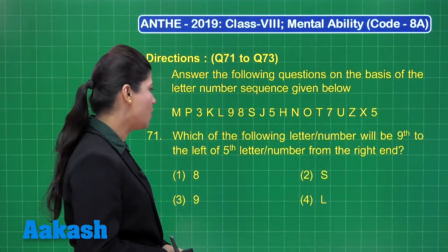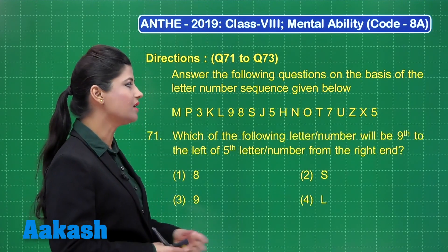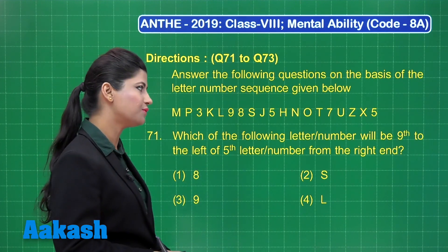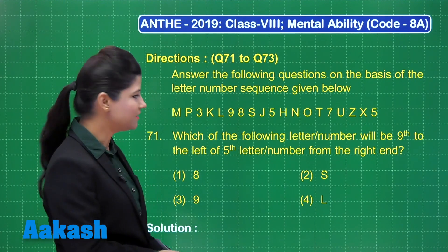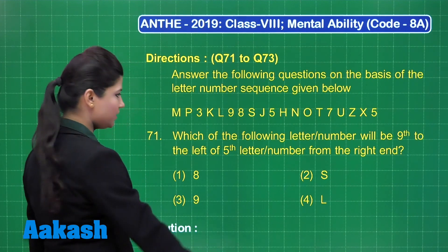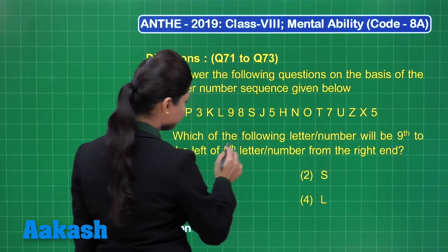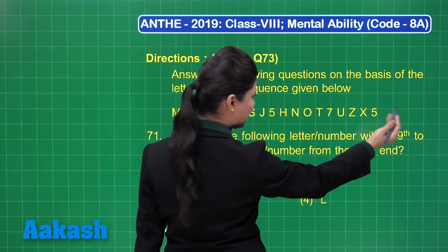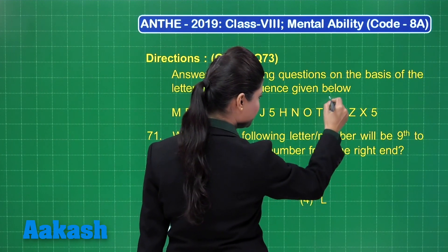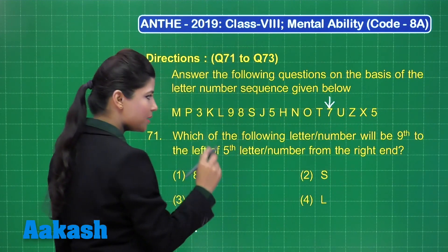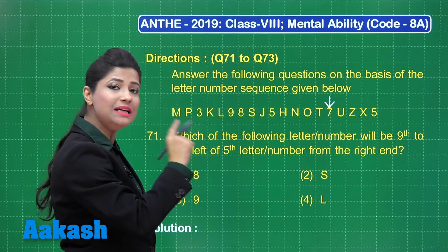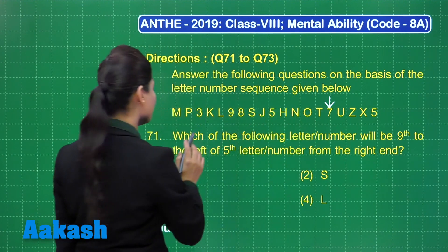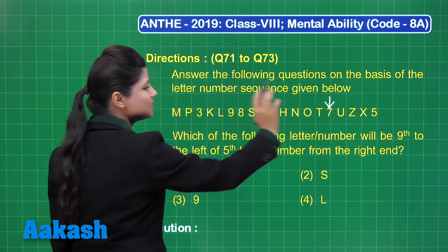Question number 71 states: which of the following letter or number will be ninth to the left of the fifth letter or number from the right end? To solve this, you need to first figure out the fifth letter from the right end. Going from the right end — second, third, fourth — this is the fifth number, seven, from the right end. Now you need to figure out the ninth letter or number to the left of this fifth number.